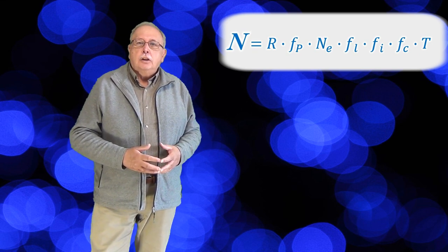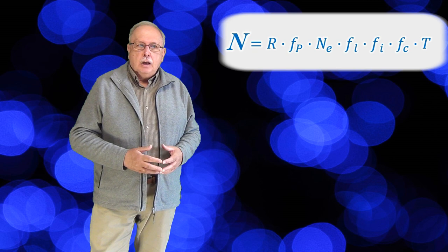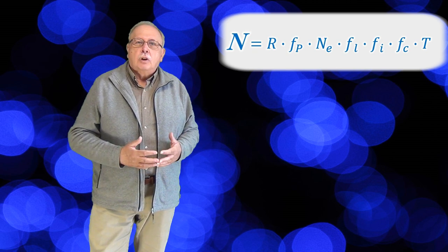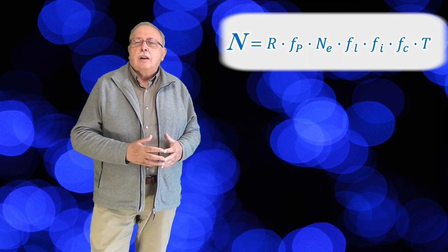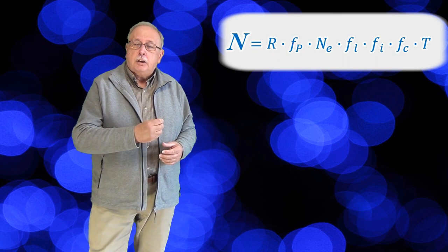Ecuația lui Drake arată așa. Este un produs care are șapte factori. Să vedem întâi ce înseamnă fiecare factor. R mare, N indice E și T sunt valori ale unor mărimi, în timp ce toți factorii care sunt notați cu F mic și cu indici reprezintă fracții subunitare. Deci fracții care iau o valoare între 0 și 1.